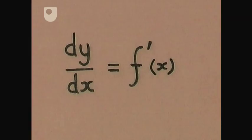Lagrange called the gradient the derivative of F and noted it F dashed X. Today, the two notations dy by dx and F dashed X are used almost interchangeably.